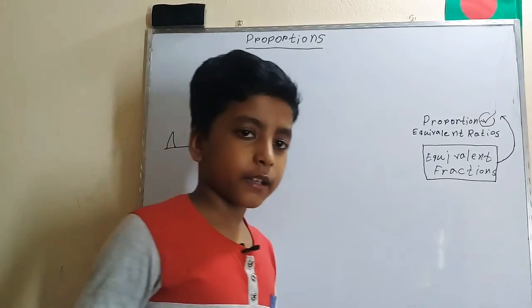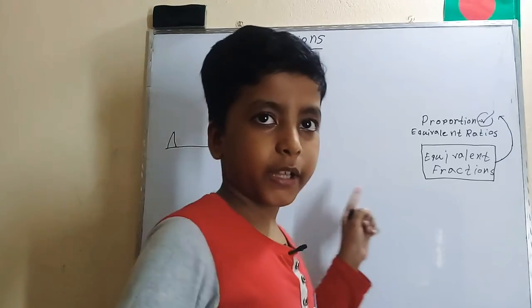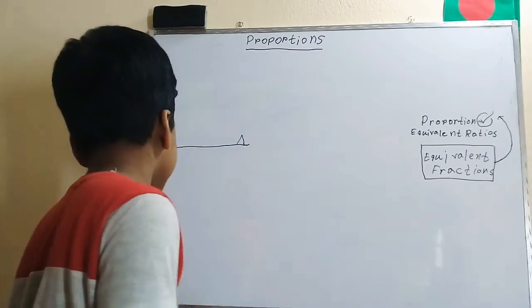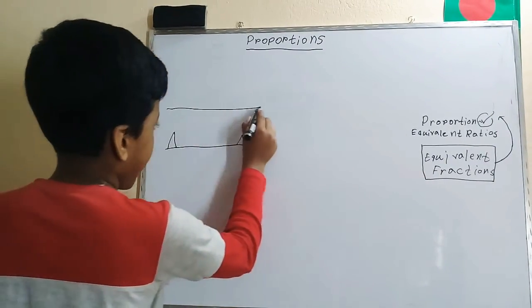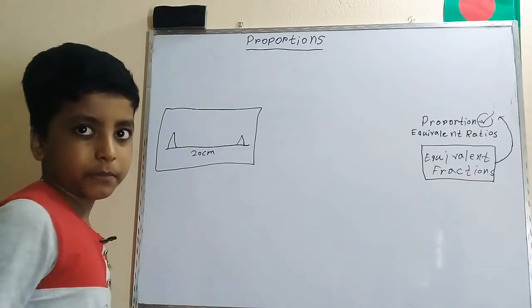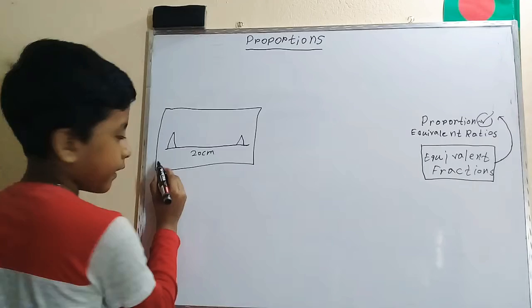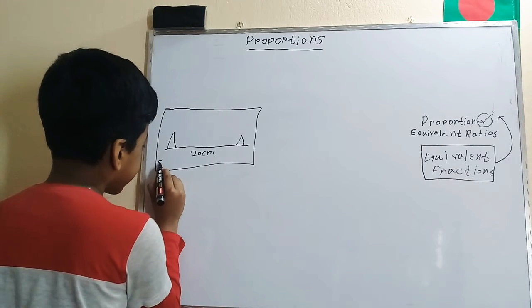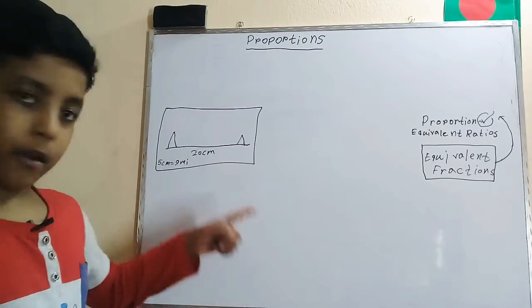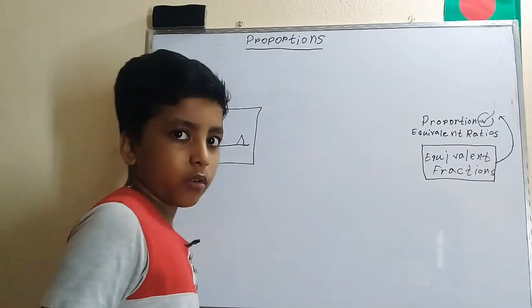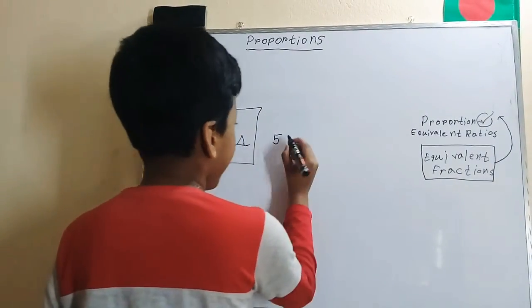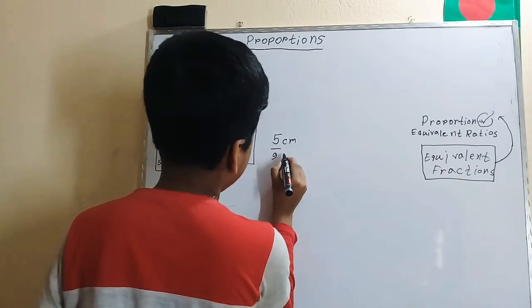So now proportions are used all the time in the real world, as well as ratios. So now let's have an example. Let's say that two mountains are on a map, and we want to know how many miles it is from those two mountains. Now this is a map, and the mountains are 20 centimeters away from each other. It also has a scale on it that says five centimeters on the map is equal to nine miles on the real island.